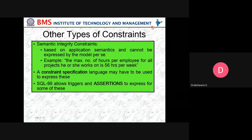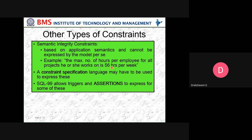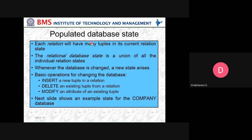Other types of constraints include semantic integrity constraints based on application semantics that cannot be expressed by the model alone. For example, the maximum number of hours per employee for all projects they work on is 56 hours per week. A constraint specification language may be needed to express this. SQL-99 allows triggers and assertions to express some of these constraints. A relational database state is a union of all the individual relation states. Basic operations for changing the database are: insert a new tuple in a relation, delete an existing tuple from the relation, and modify an attribute of an existing tuple.